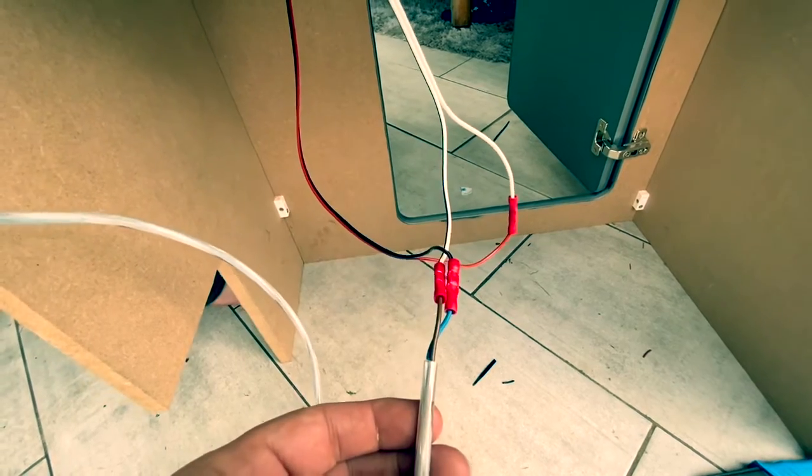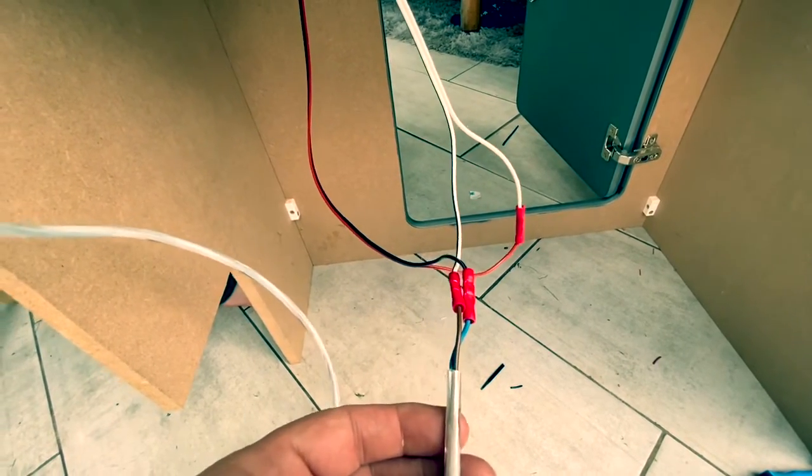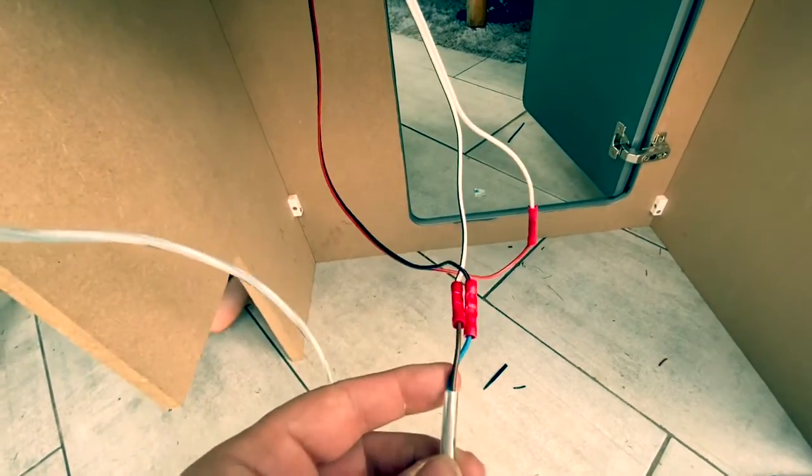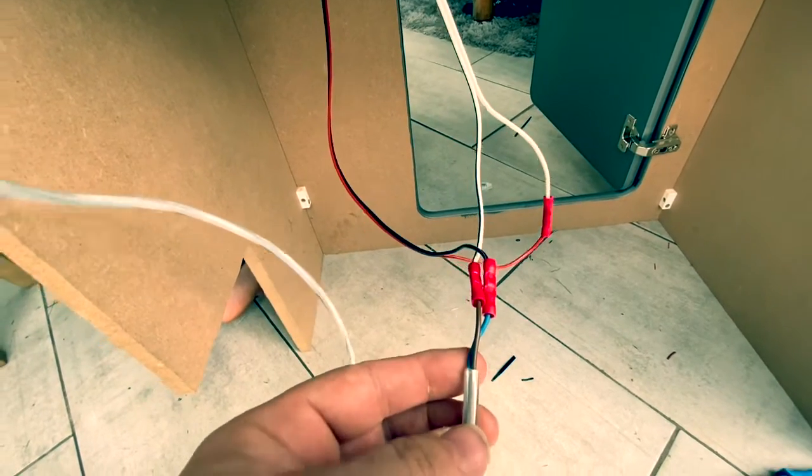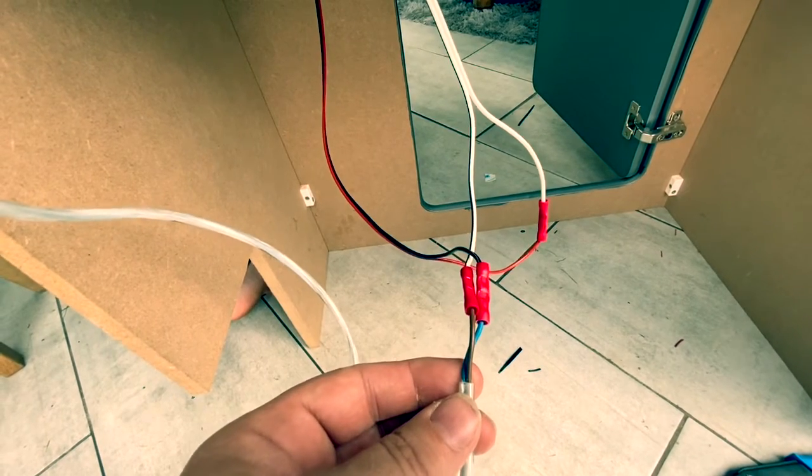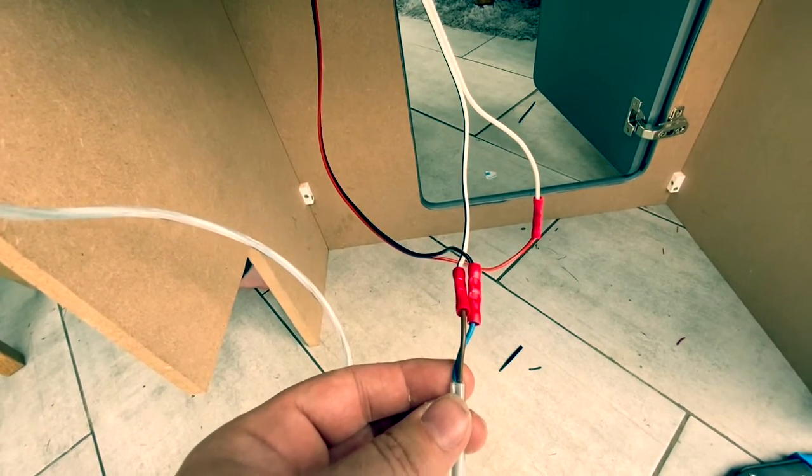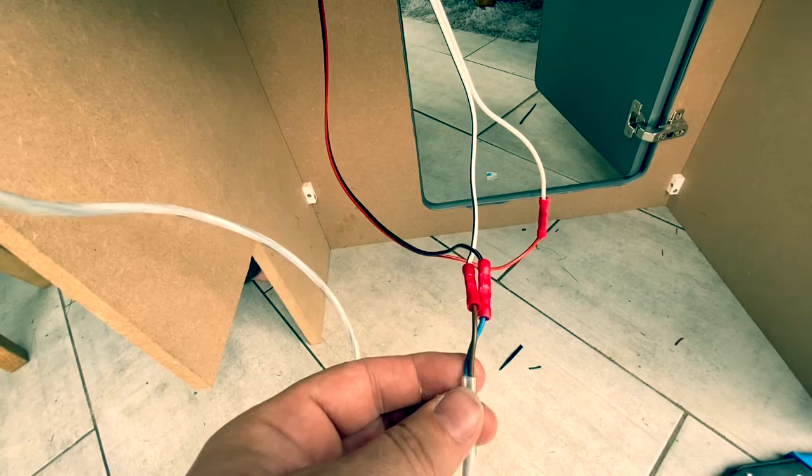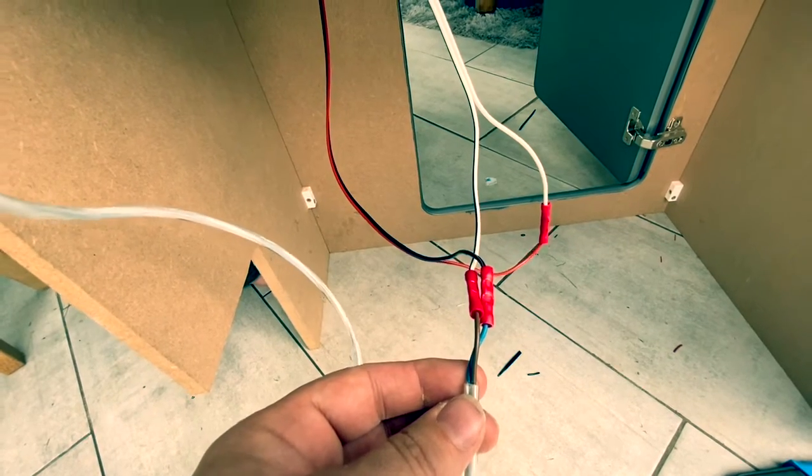That's the wiring now all crimped in for the micro switch on the tap. Just to quickly run through again what I've done in terms of the connections: I've taken the positive of the pump, which is the brown wire, and that's gone into the negative of the tap on the micro switch.